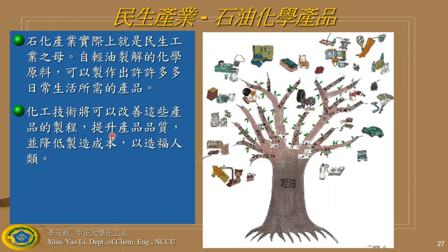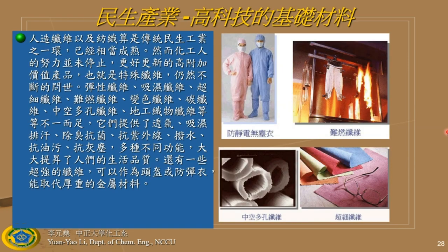Some people think chemical engineering only converts crude oil into products, but that's only partially correct. For example, artificial fibers have many applications: firefighters need heat-resistant protective clothing, and engineers working in clean rooms need anti-static clothing. Chemical engineers design these kinds of products.